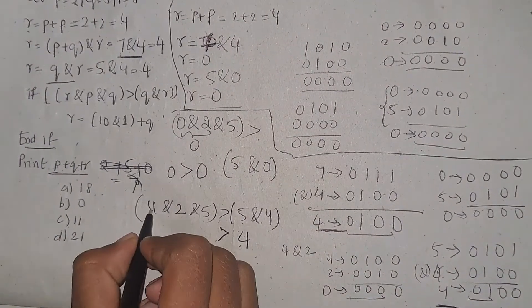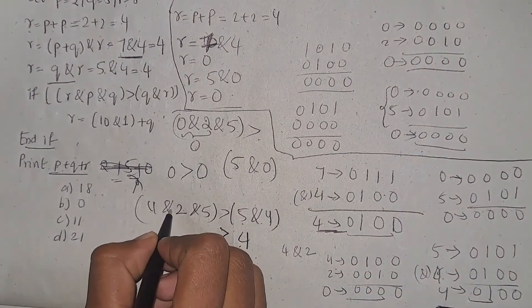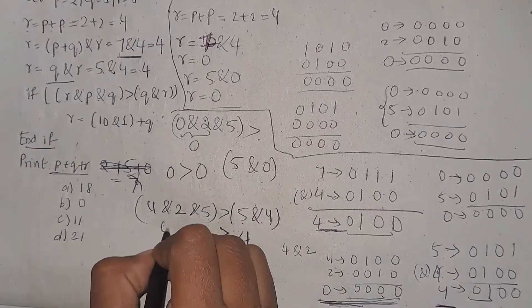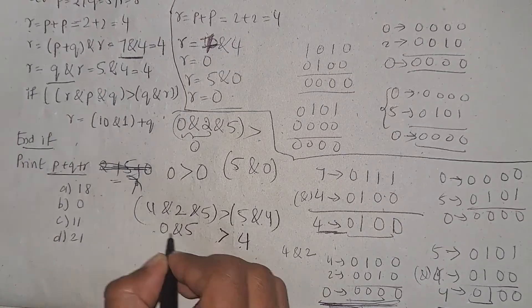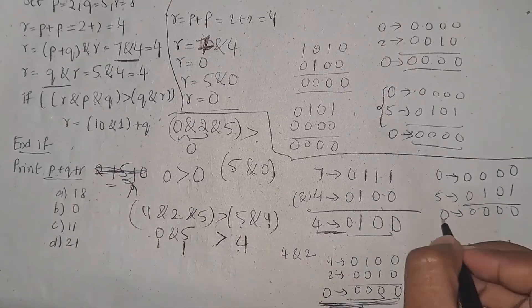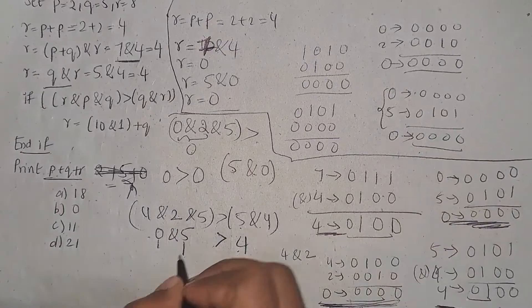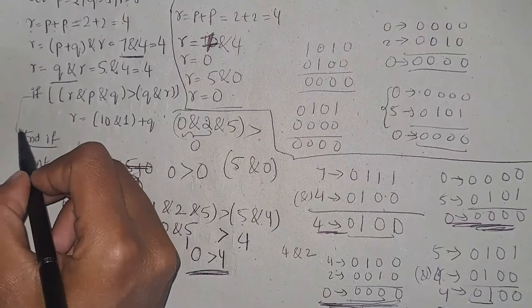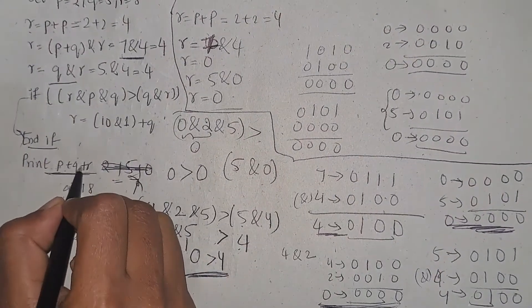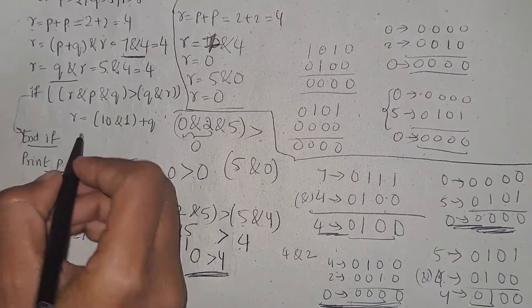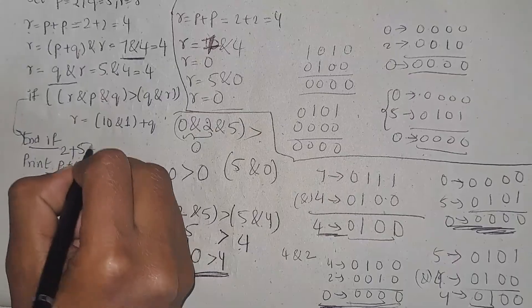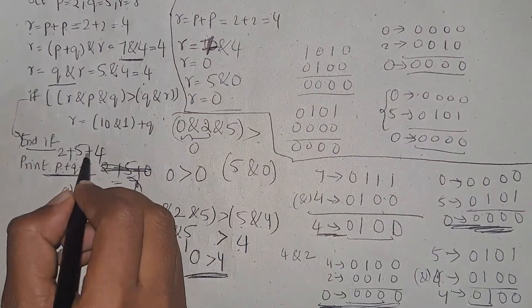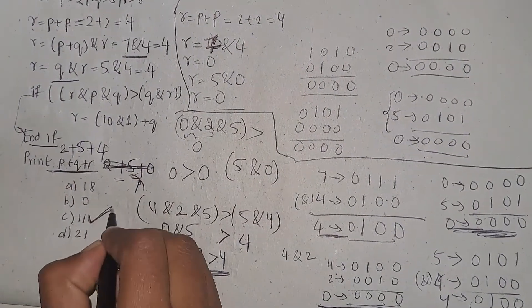Perform 4 bitwise AND 2, you will get 0. Then 0 bitwise AND 5 gives 0. So now 0 is greater than 4 — this is false. You will come out of the if condition and print p plus q plus r. p is 2, q is 5, and r is 4, so 2 plus 5 plus 4 equals 11. The answer is 11.